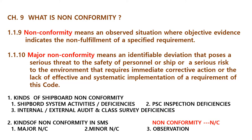Chapter 9 — What is a Nonconformity? It comes from the ISM Code definition. Section 1.1.9: Nonconformity means an observed situation where objective evidence indicates the non-fulfillment of a specified requirement. Section 1.1.10: Major nonconformity means an identifiable deviation that poses a serious threat to the safety of personnel or ship, or a serious risk to the environment that requires immediate corrective action, or the lack of effective and systematic implementation of a requirement of this code.